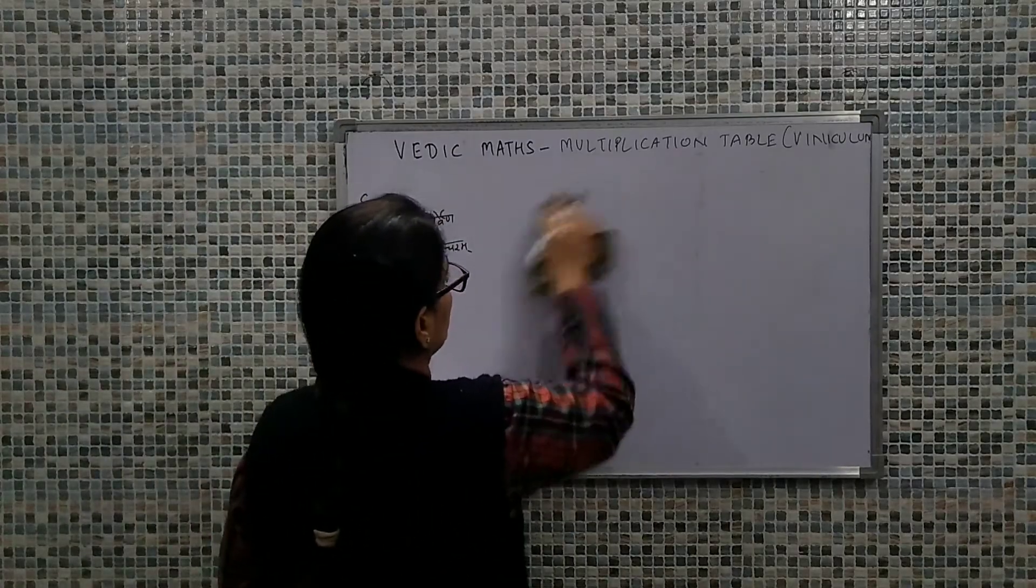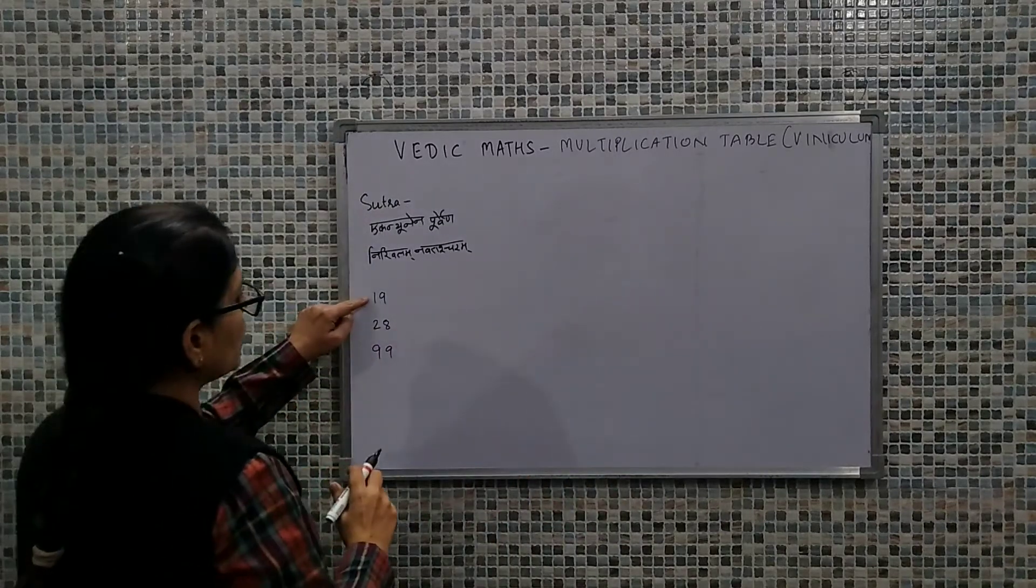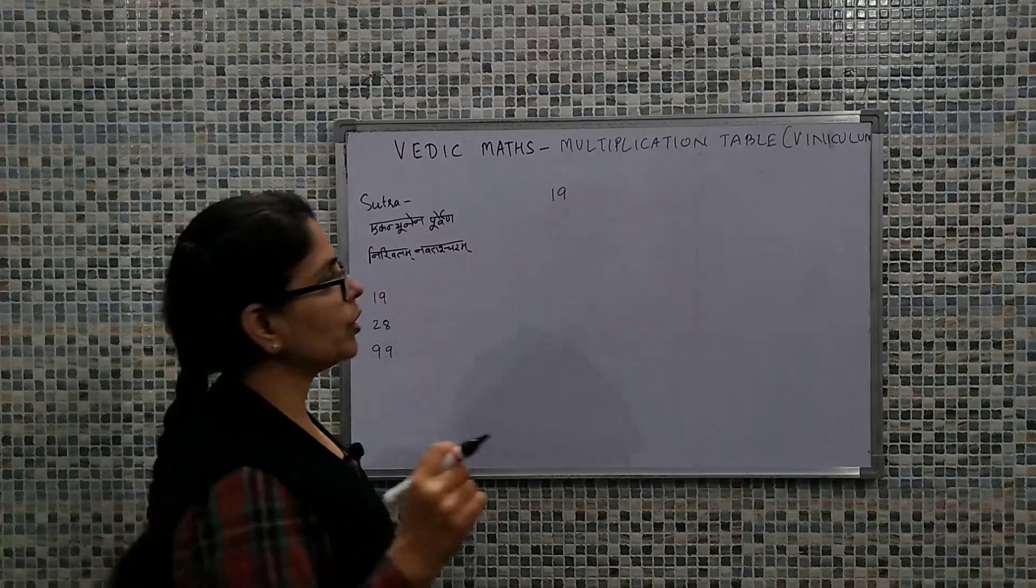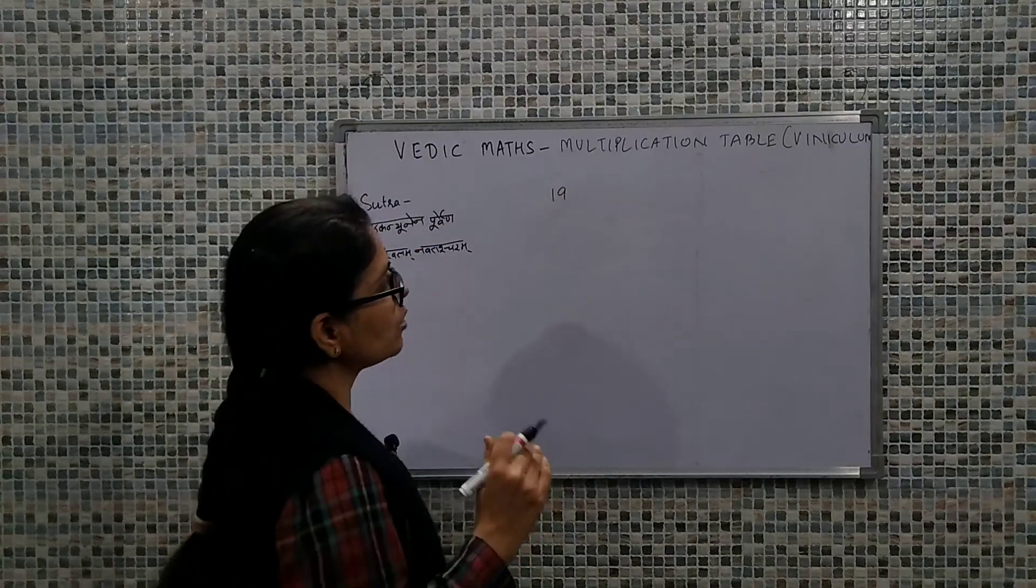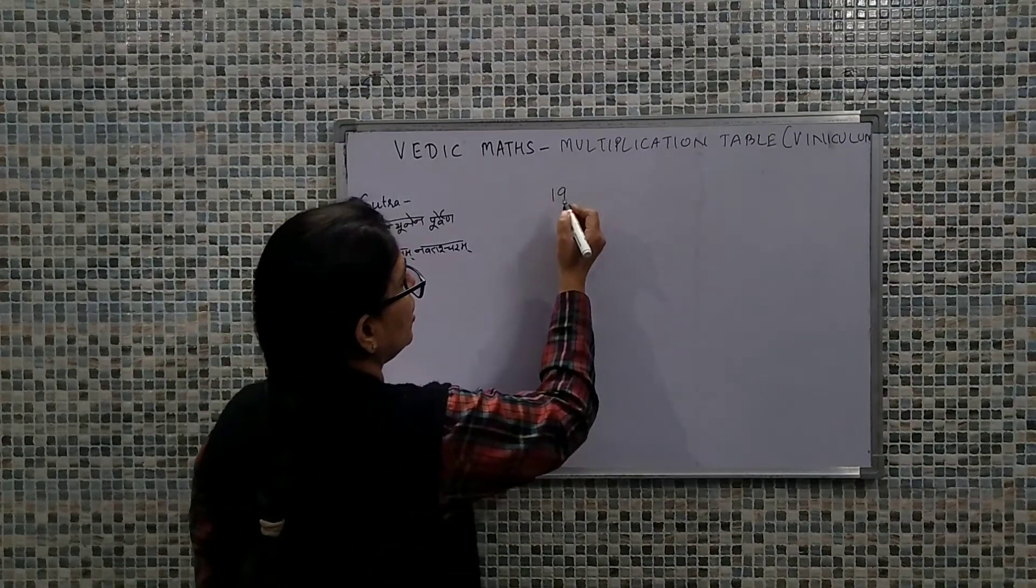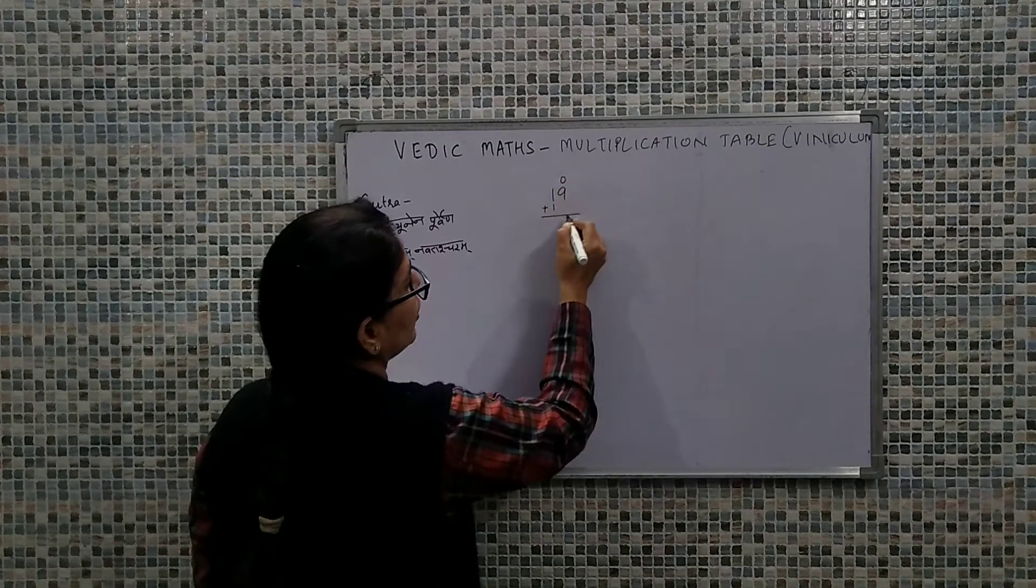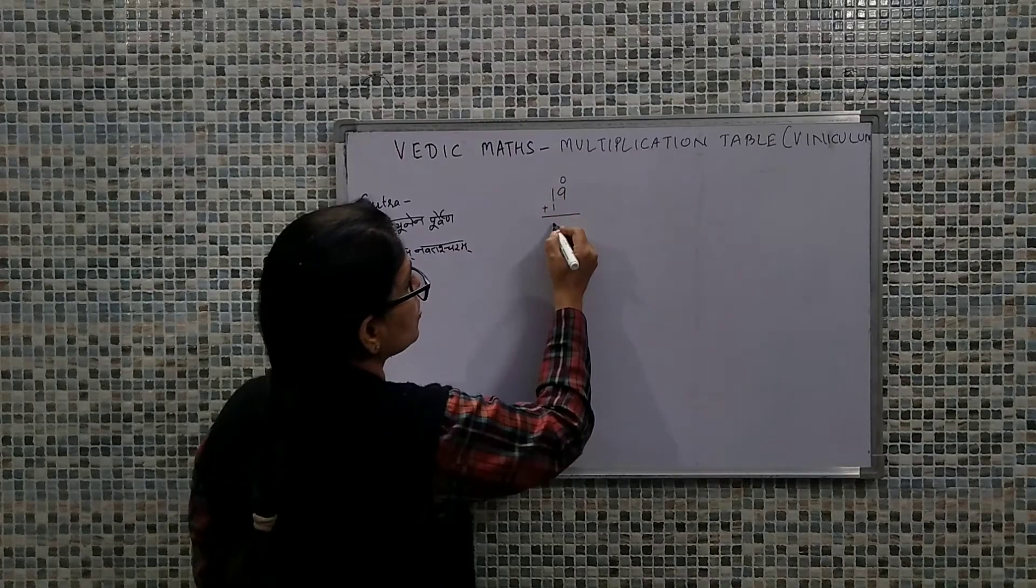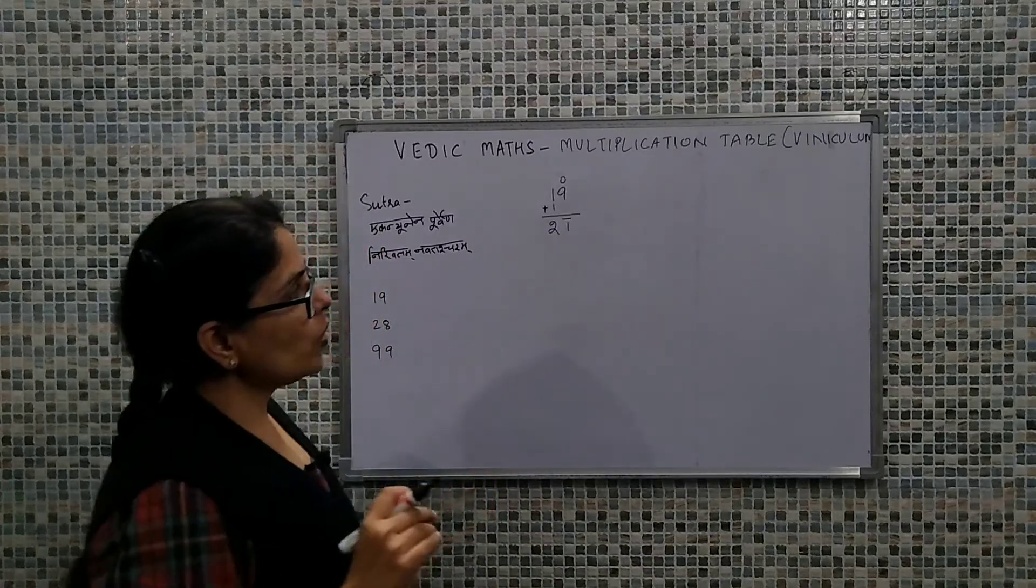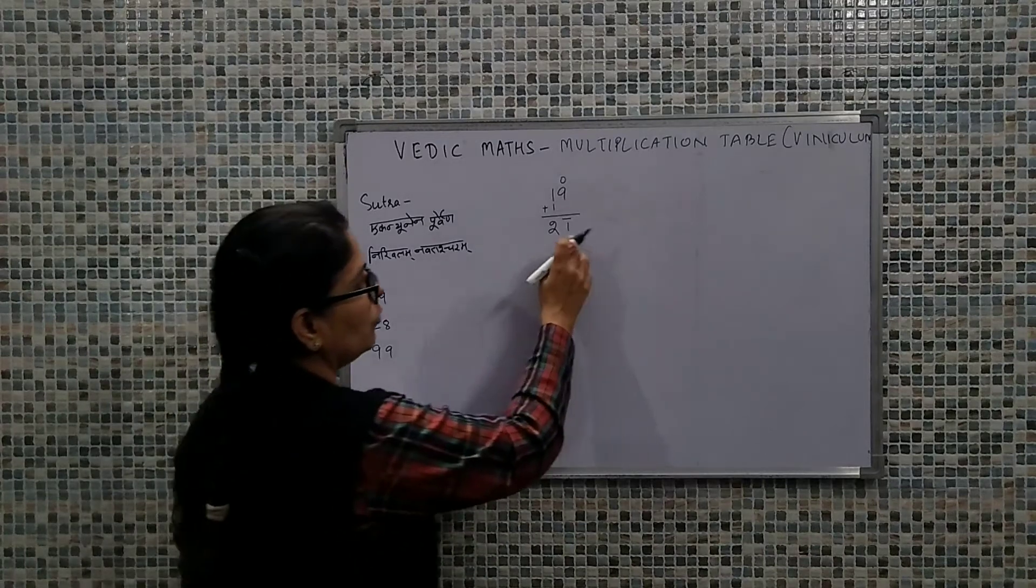So we would be taking the first value whose multiplication table we need to generate. Let the first value be considered as 19. If we have to use the viniculum concept, then first we will form the viniculum number of this number. So we'll do Ekadhikena Purvena and Nikhilam Navatascaramam Dasatah. So this will become 2 with bar and 1, meaning 2 and 1 with a negative sign. So we have formed the viniculum number of this number.